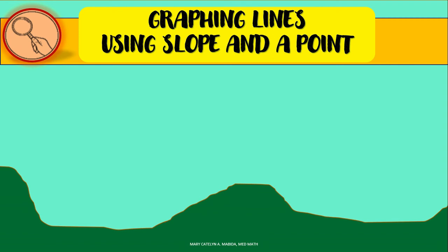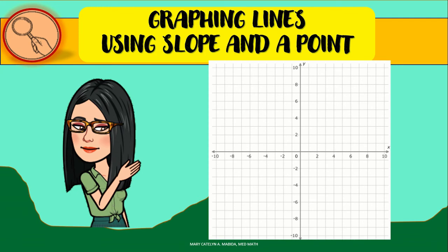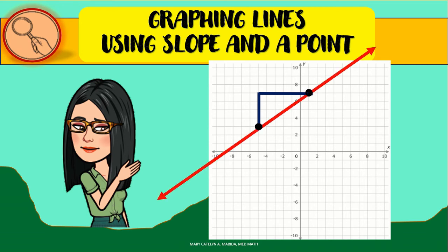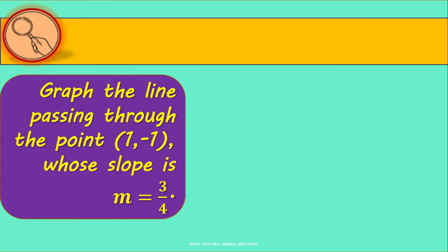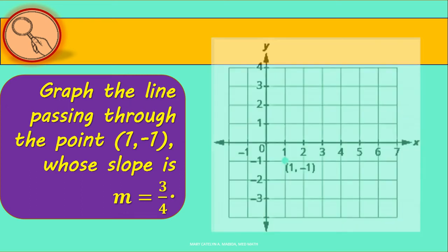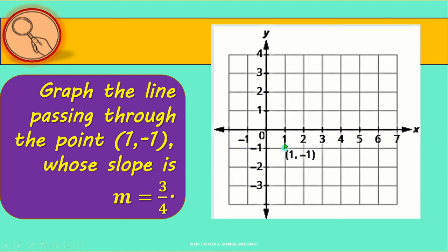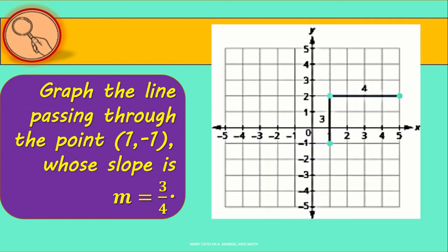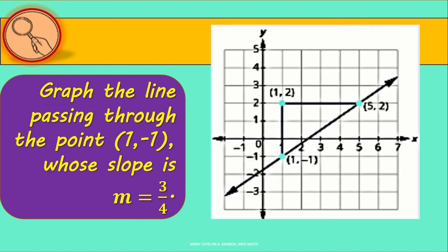Now let us graph linear equations using the slope and a point on the line. This is done by plotting the given point first, then finding another point using the slope — which is rise over run — and connecting the points. Graph the line passing through point (1, −1) with slope 3/4. From (1, −1), rise 3 units up and run 4 units to the right. If the rise is positive, move up; if negative, move down. If the run is positive, move right; if negative, move left.